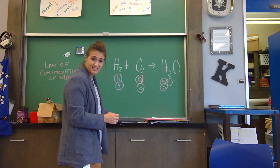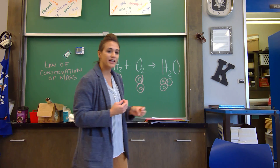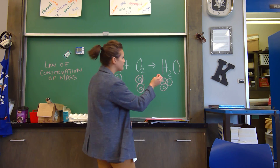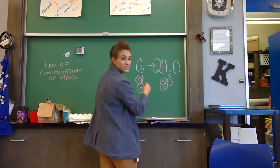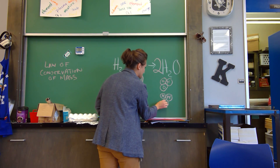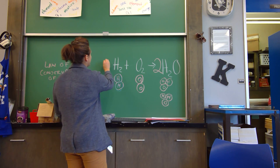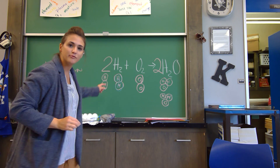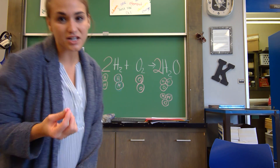What you can do is add coefficients — a coefficient is just a number that comes before a compound. Since I have two H's over here and two H's over here that's even, but my O's are not. So I'm going to add a coefficient of 2 in front of H2O, which gives me a total of four H's and two O's. But now over here I have two H's and over there I have four H's, so I need to balance again. I'll put a 2 in front of my H2, which gives me four H's total — two H's here and two H's here. Now I have four H's and two O's on either side of the equation. And that's how you balance a chemical equation.